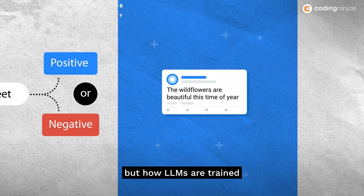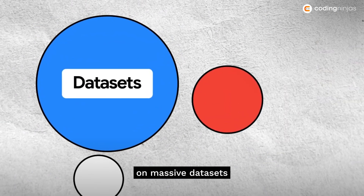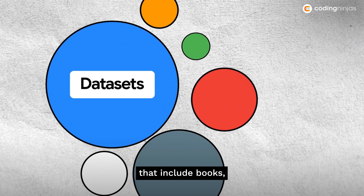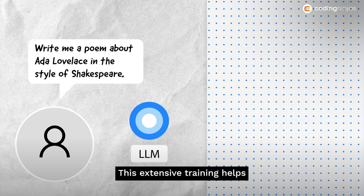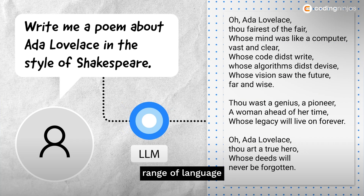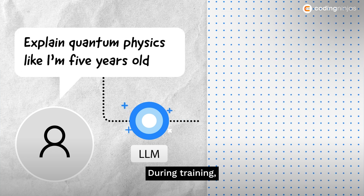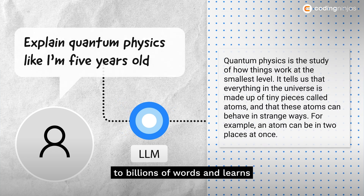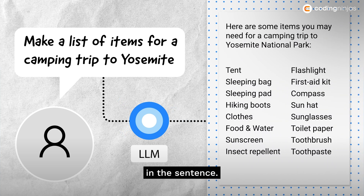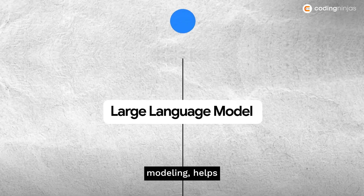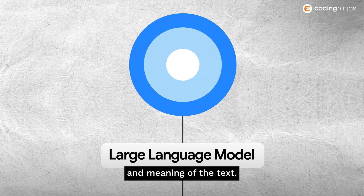But how are LLMs trained on massive datasets? LLMs are trained on massive datasets that include books, articles, websites, and more. This extensive training helps the model learn a wide range of language patterns and contexts. During training, the model is exposed to billions of words and learns to predict the next word in a sentence. This process, called language modeling, helps the model understand the structure and meaning of text.